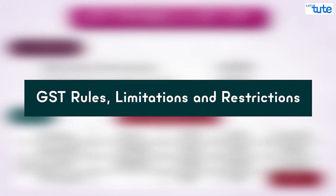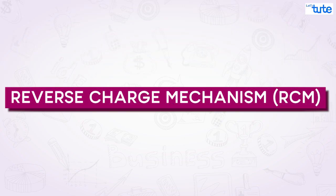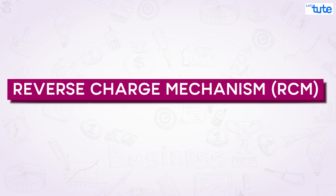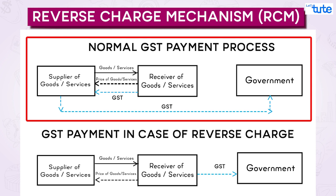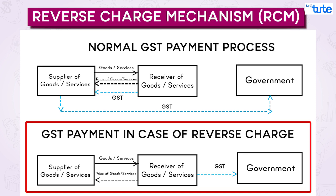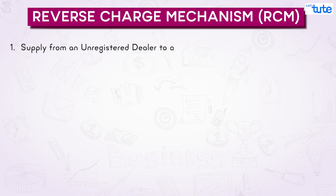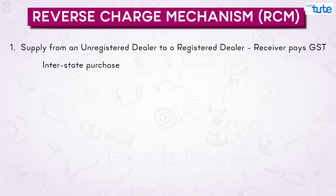There are certain rules, limitations, and restrictions on taking input tax credit, which will be studied in detail while studying GST as an indirect tax subject. Now moving to the last concept of today's session: Reverse Charge Mechanism (RCM). Normally, the supplier of goods and services pays the tax to the government, but under RCM the tax is paid by the receiver instead of the supplier — the chargeability gets reversed. One case where reverse charge applies is when an unregistered vendor supplies goods or services to a registered person: for interstate purchase, the buyer pays IGST; for intrastate purchase, the buyer pays CGST and SGST under RCM, preventing tax evasion from unregistered dealers.